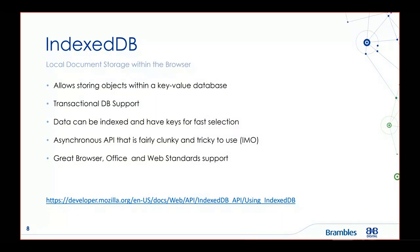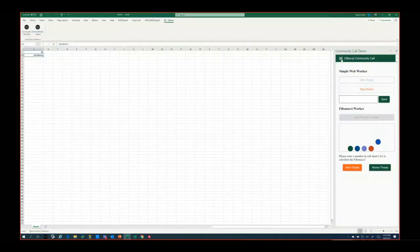IndexedDB is a local document storage within your browser. It allows you to store objects within a key-value database. It does have transactional support, so if you want actual transactions and indexes, you can do that. You can delete and remove items. It is asynchronous but, in my opinion, it's a clunky API — the ideas behind IndexedDB are good but it's tricky to use. My suggestion is to use libraries out there that wrap it with a promise-based API or observables depending on your preference.